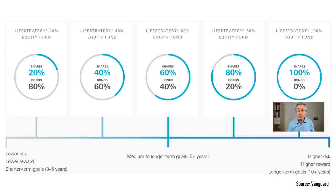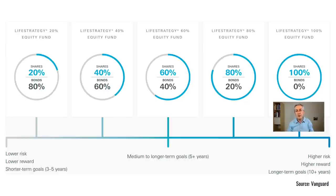The other consideration is how much risk appetite you've got. Some people just don't like risk. If that's the case, then it would be more sensible to have a lower amount of equity in your portfolio — maybe not Life Strategy 100, but maybe Life Strategy 80 or 60 over the long term. But bear in mind that will have an impact on your returns — they will be lower.